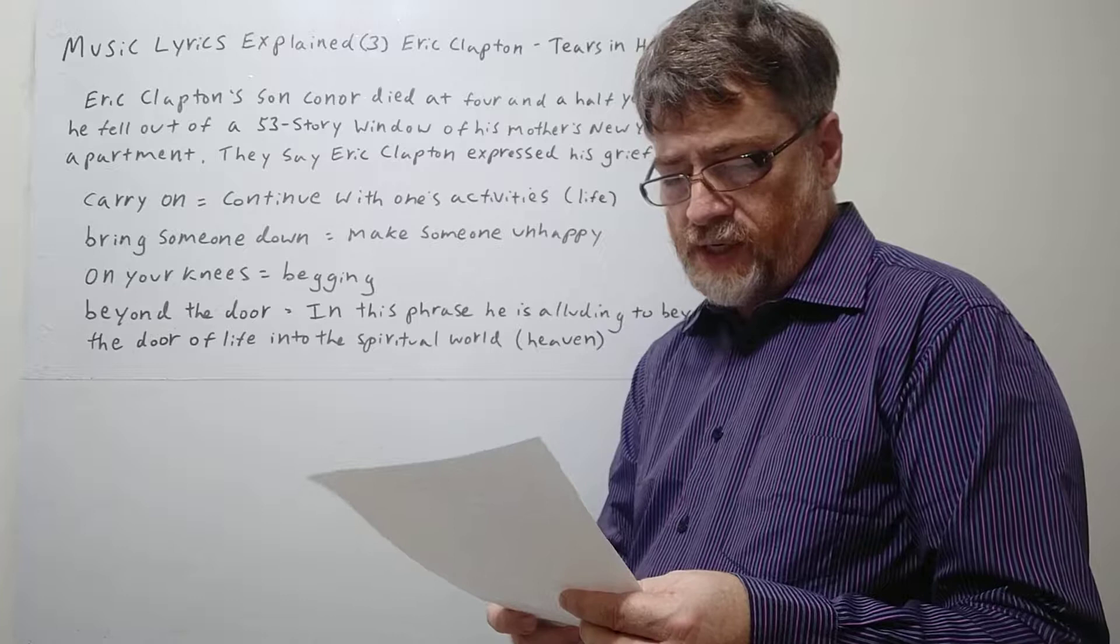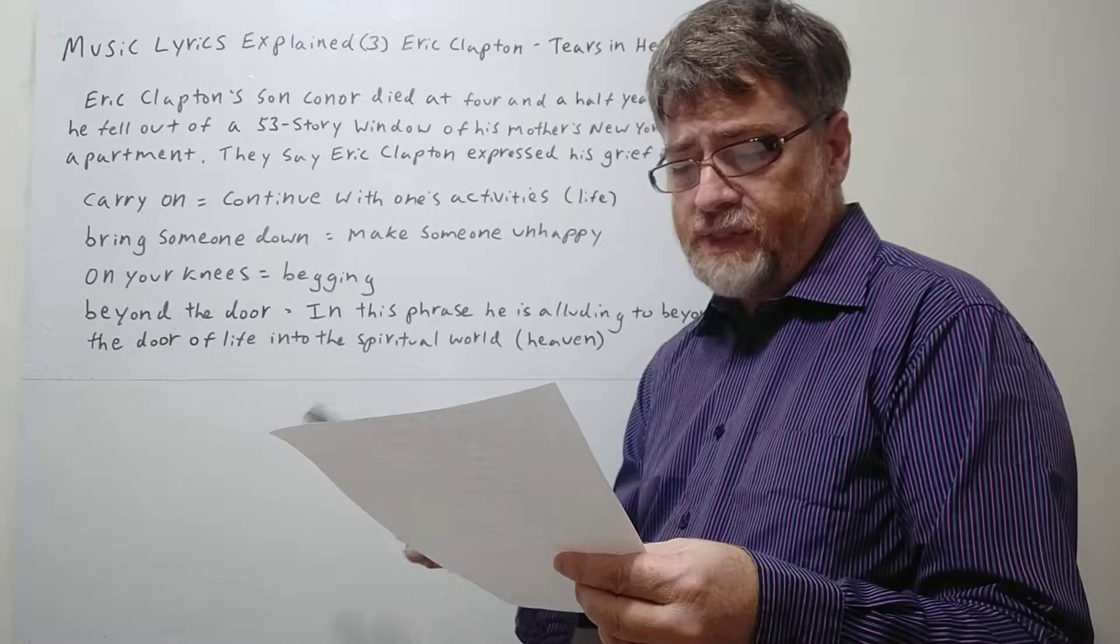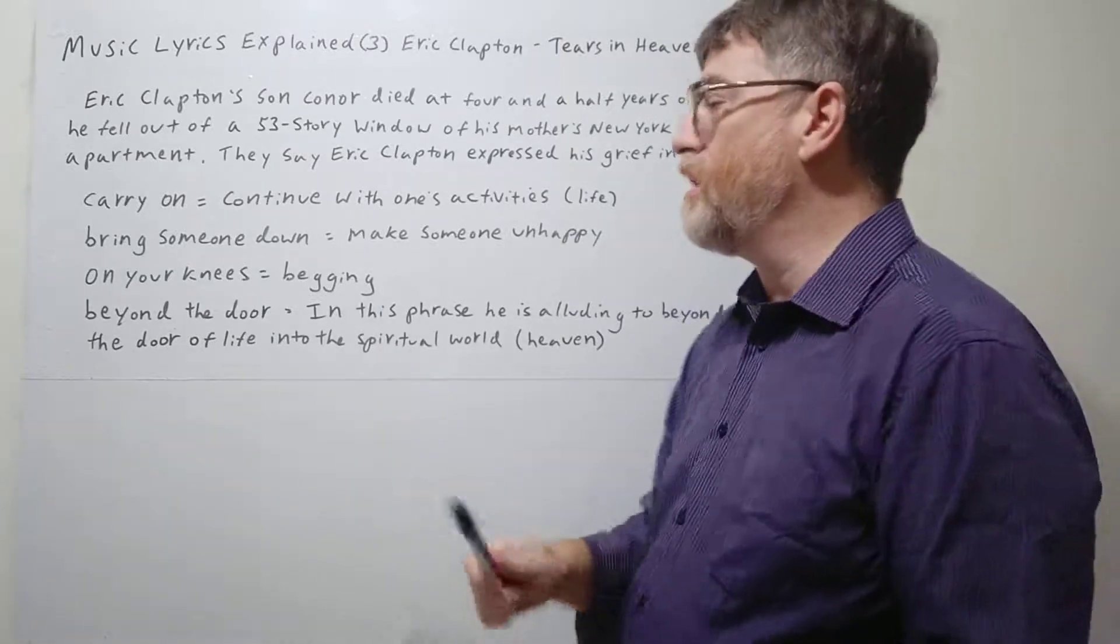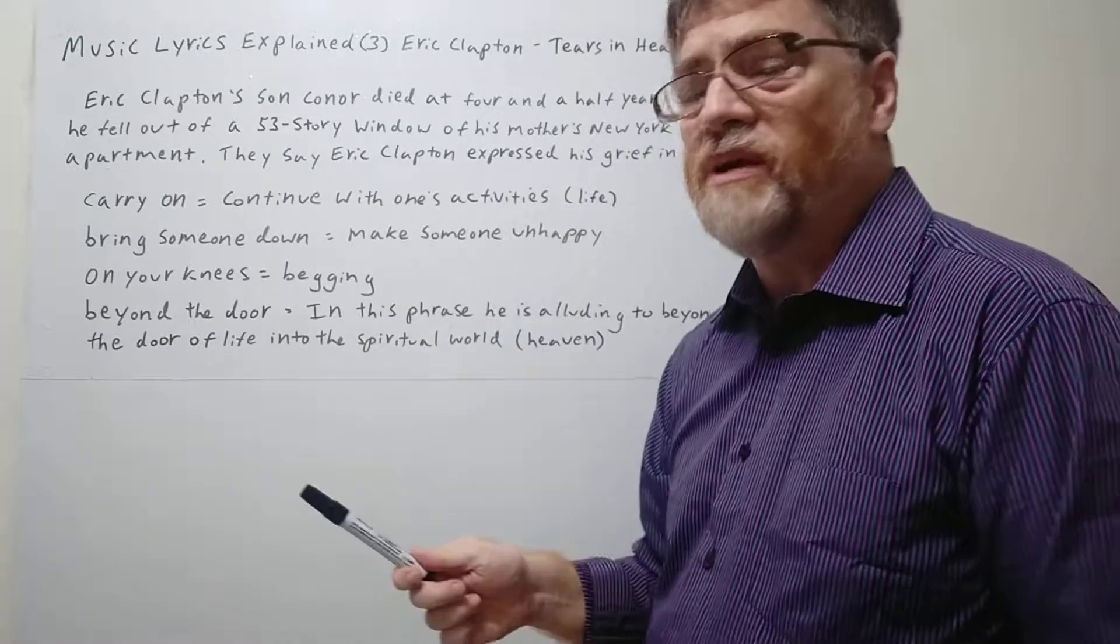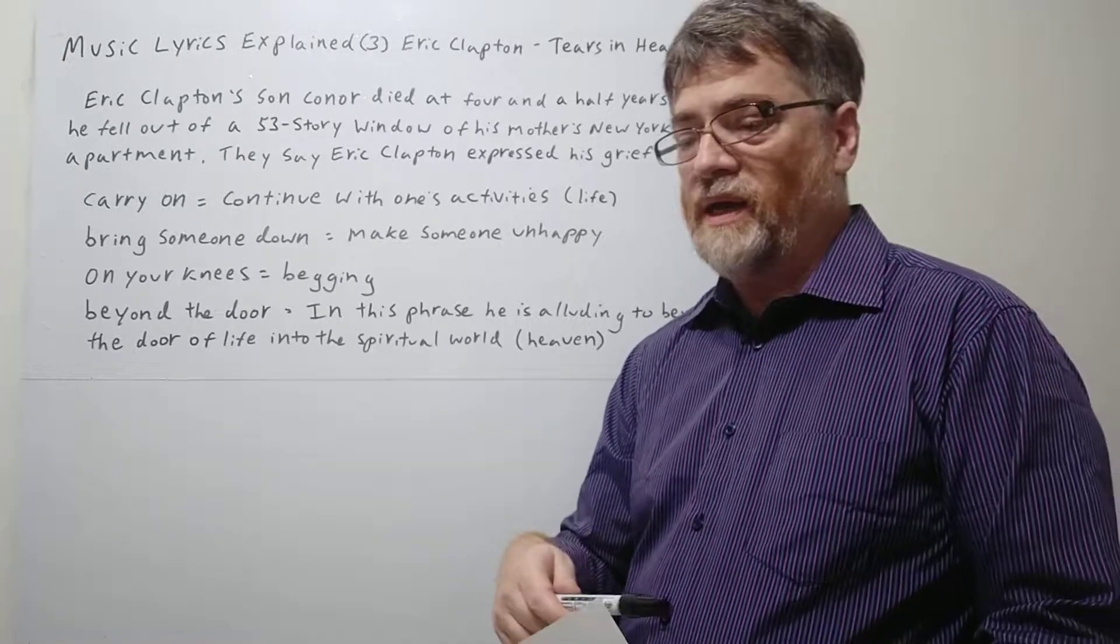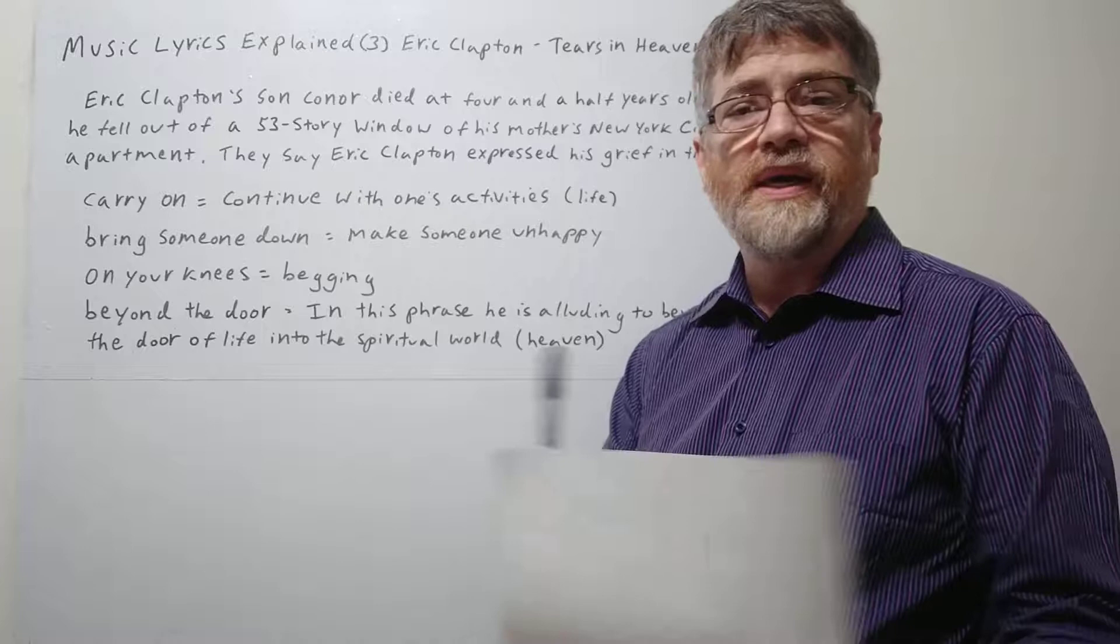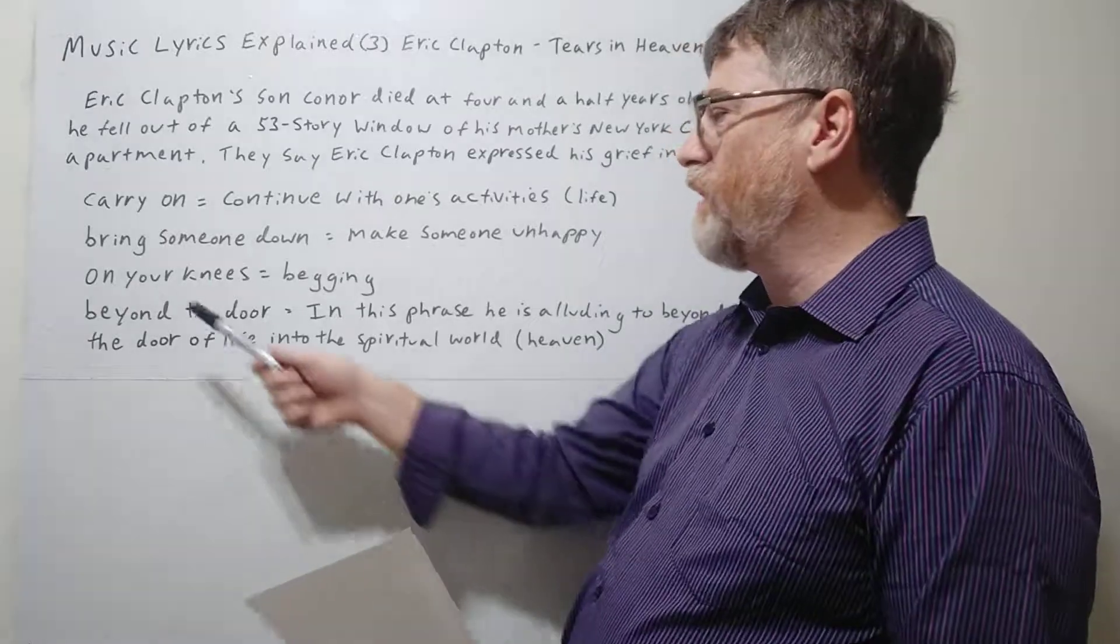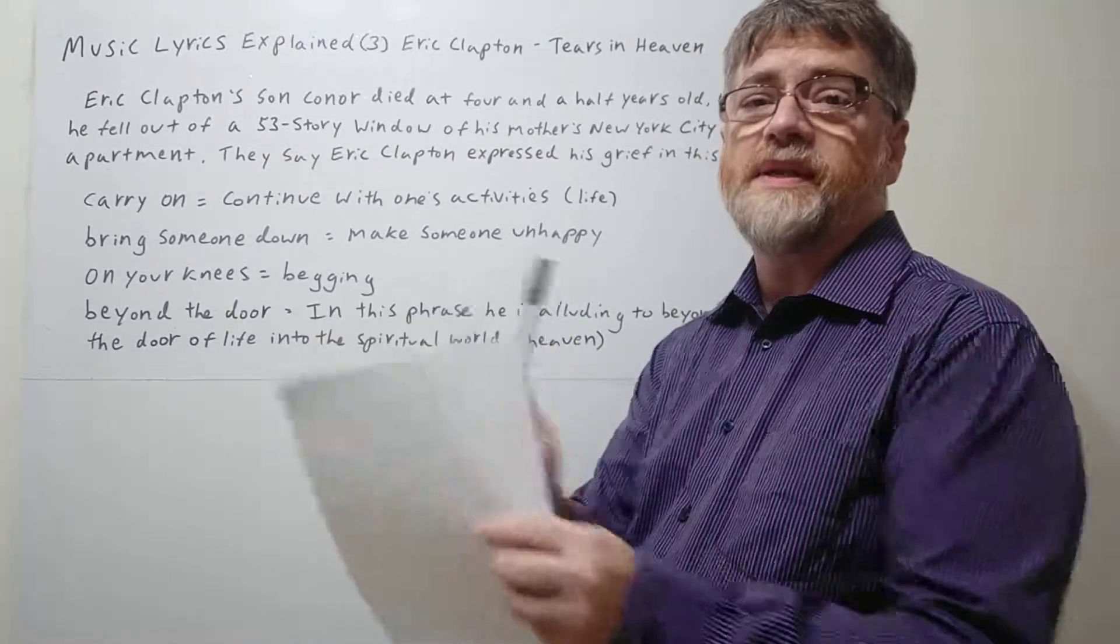And then of course it continues and it goes into this chorus here. Time can bring you down. Time can bend your knees. Time can break your heart. So basically what he's saying, well if you bring someone down it means to make someone unhappy. If time can bring you down, you never know what's going to happen in your life. You never know what tragedies may befall you or may happen to you that's unexpected. Life has a way of throwing things at you. Can you handle them? Time can bend your knees. Bend your knees or on your knees, it's the idea of like begging.